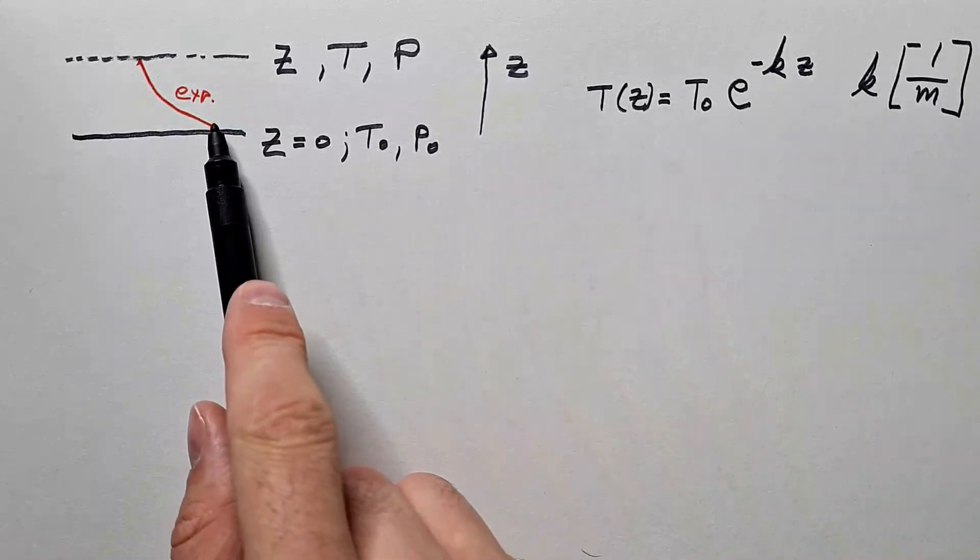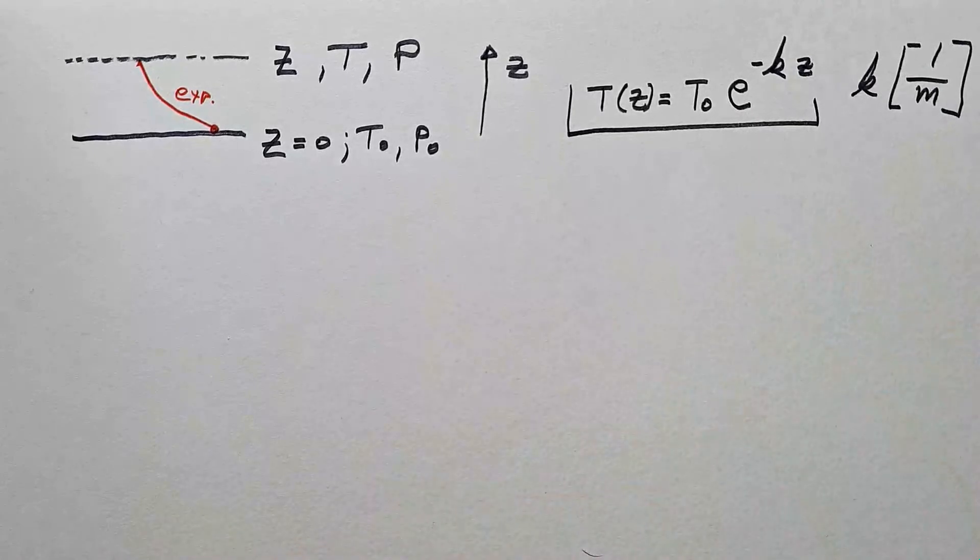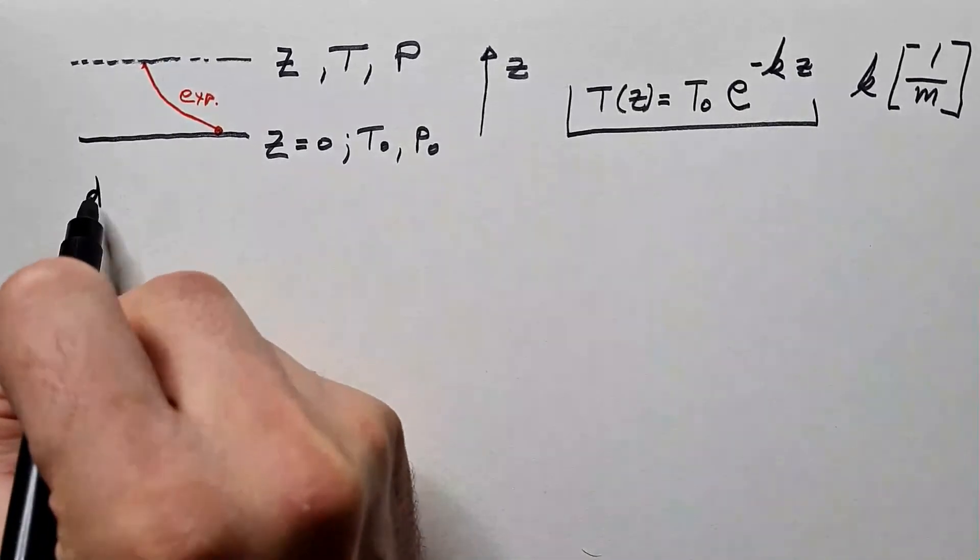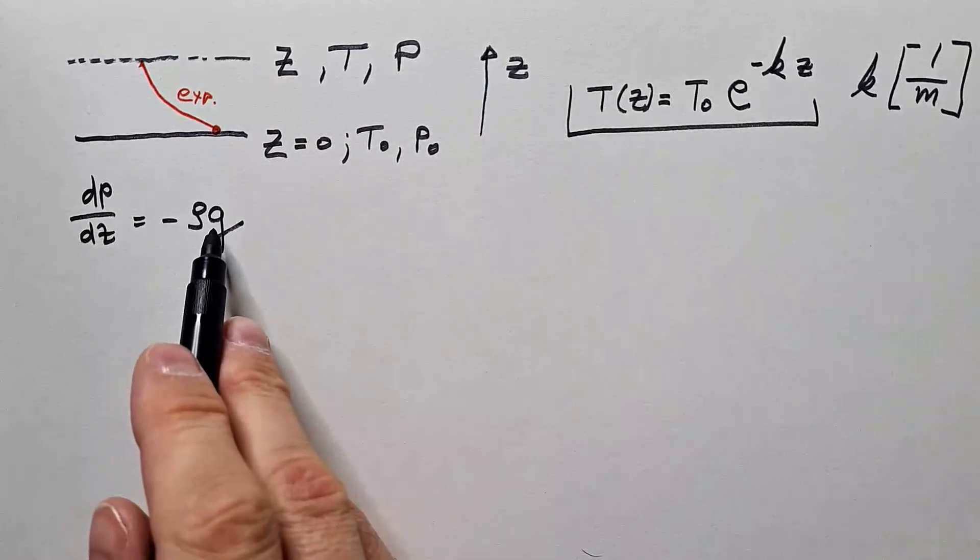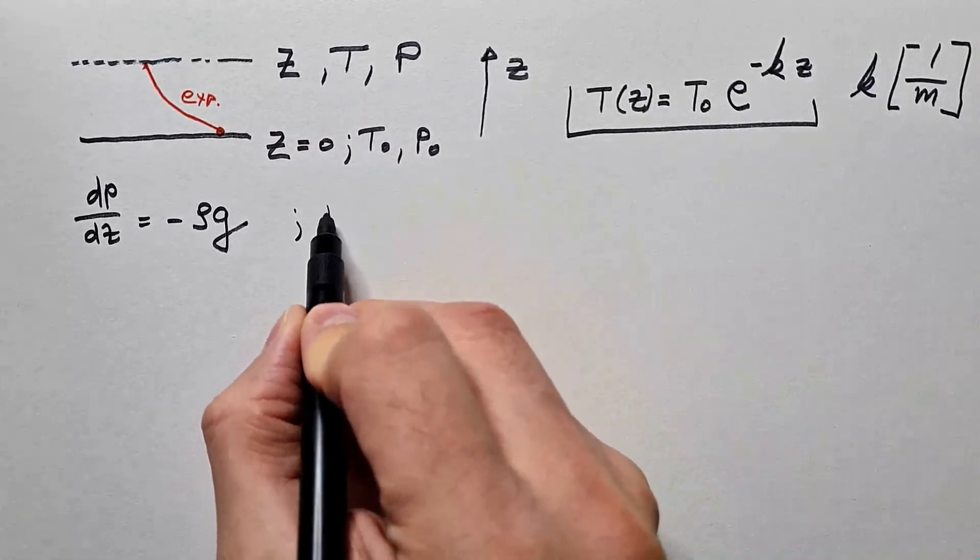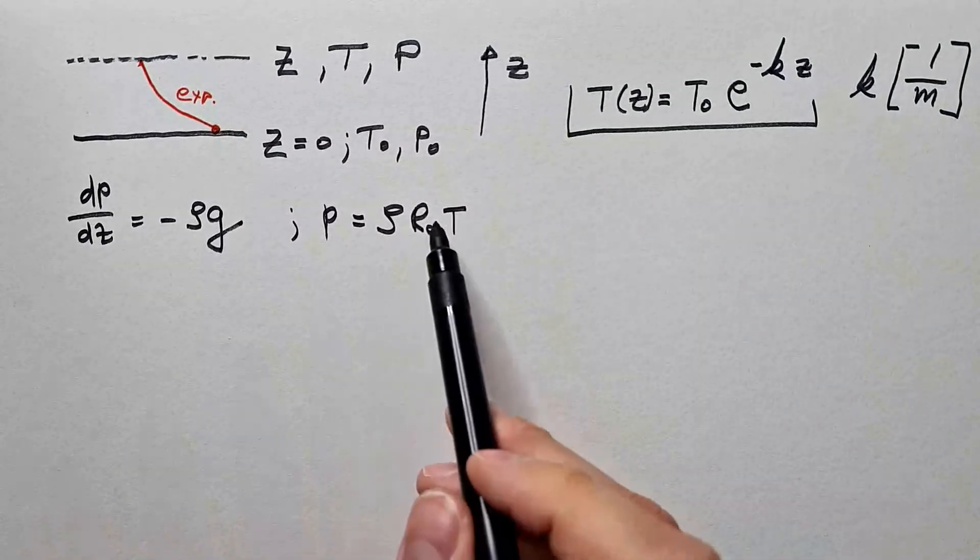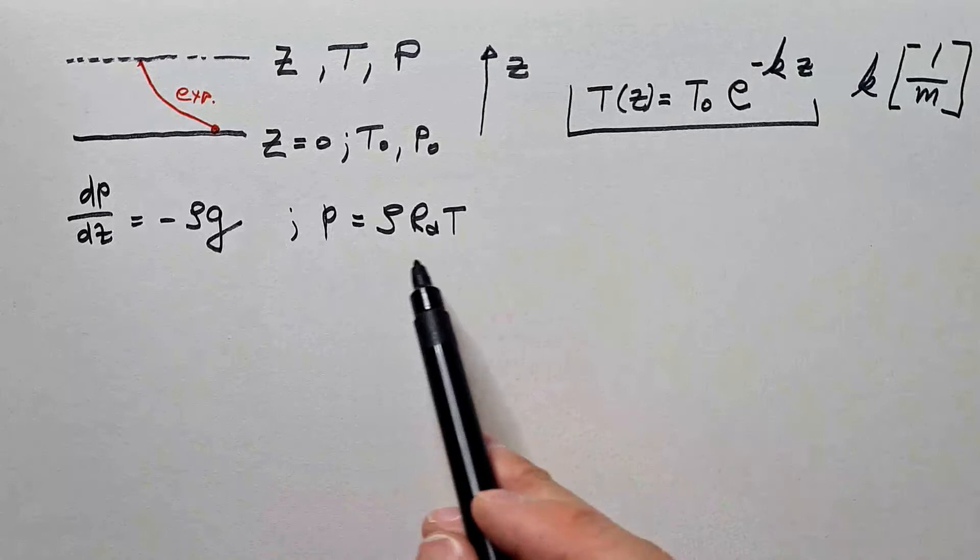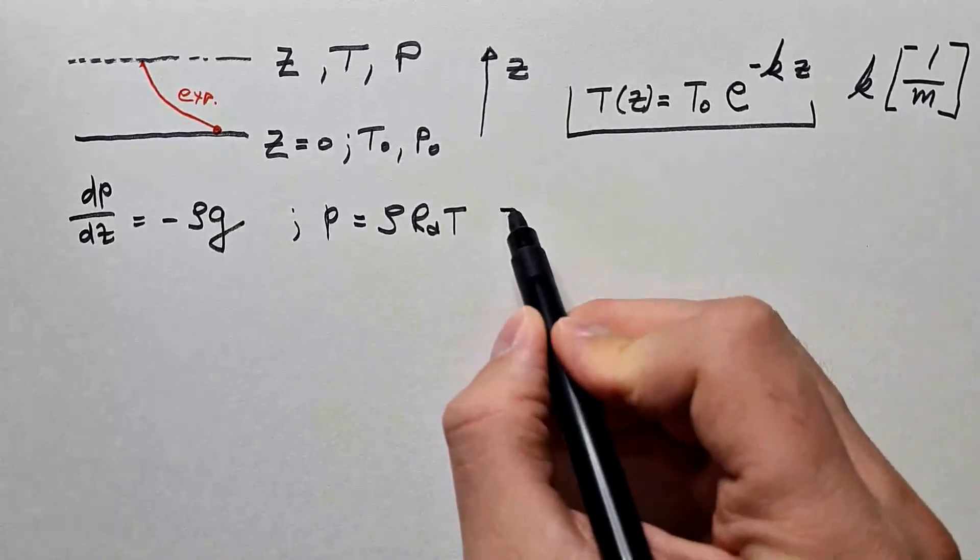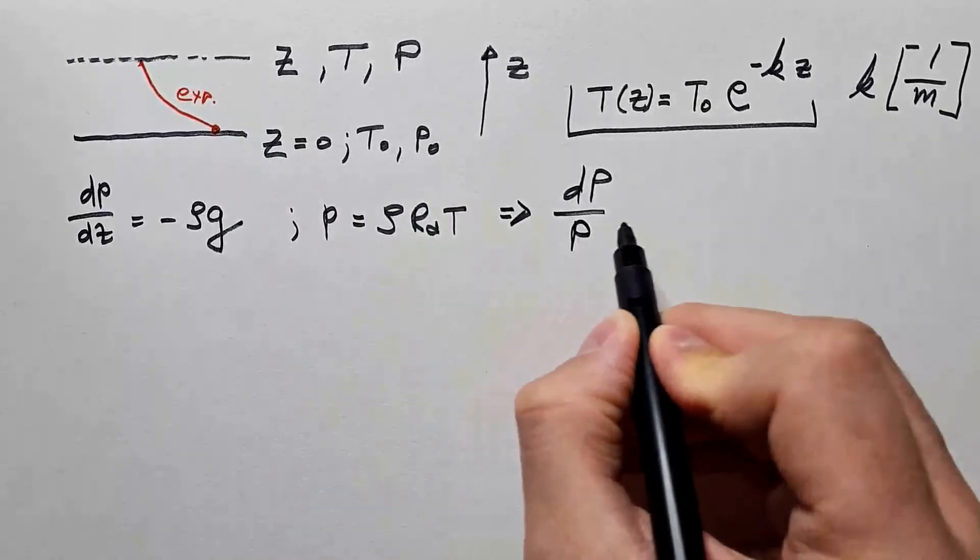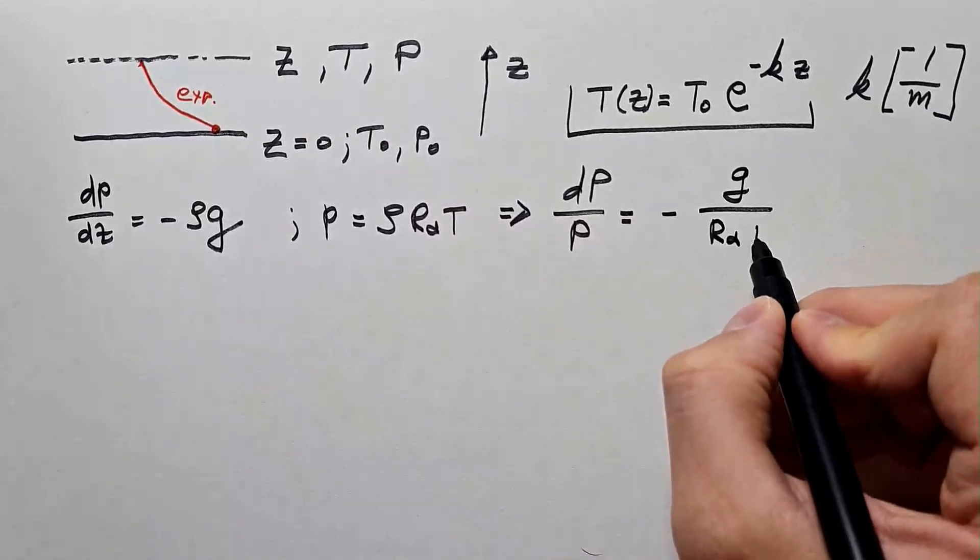Now, this scale factor K will tell us how rapid this exponential decrease is. So this is the expression now that we will combine with hydrostatic equation. dP/dz is minus rho g, where rho is air density, g is gravitational acceleration. I will use equation of state to eliminate density. P is equal rho Rd T, where Rd is gas constant for dry air, so I am assuming here that air is perfectly dry. Expressing rho from this equation and substituting here, we get that dP/P is equal minus g over Rd T dz.